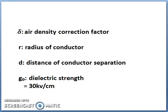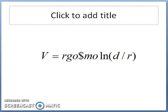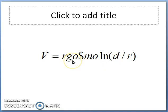Therefore, the final equation for critical disruptive voltage is: V = δ · M₀ · R · G₀ · ln(D/R), where G₀ is 30 kilovolts per centimetre, delta is 3.92B/(273 + T), M₀ is the irregularity factor, and ln(D/R) is the natural logarithm of the ratio of conductor spacing to conductor radius. This is the final equation for critical disruptive voltage.